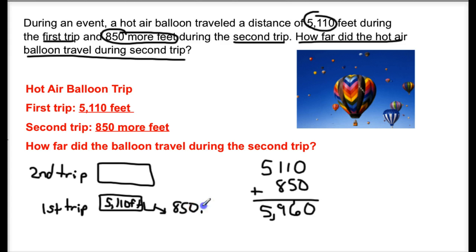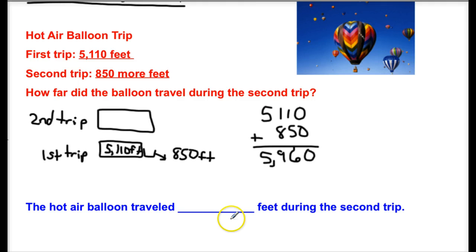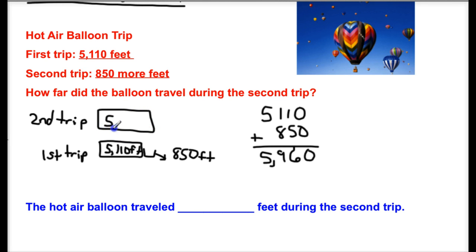The 850 feet was added to the 5,110 feet, so the hot air balloon traveled 5,960 feet. Now I can go back and fill in the second trip. This is my larger value — the second trip traveled the furthest distance — 5,960.